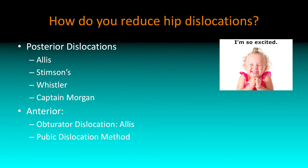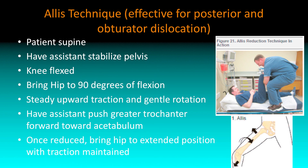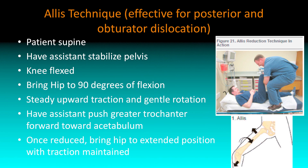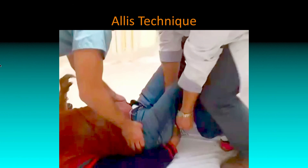So how do you actually reduce them? There are a whole bunch of methods. Starting with the Allis technique: patient lying supine, with a second person stabilizing the pelvis. Knee is flexed and you bring the hip up to 90 degrees of flexion, then apply gentle traction upward the whole time. Your assistant pushes the greater trochanter while you rotate the femoral head left or right until you get it in place.